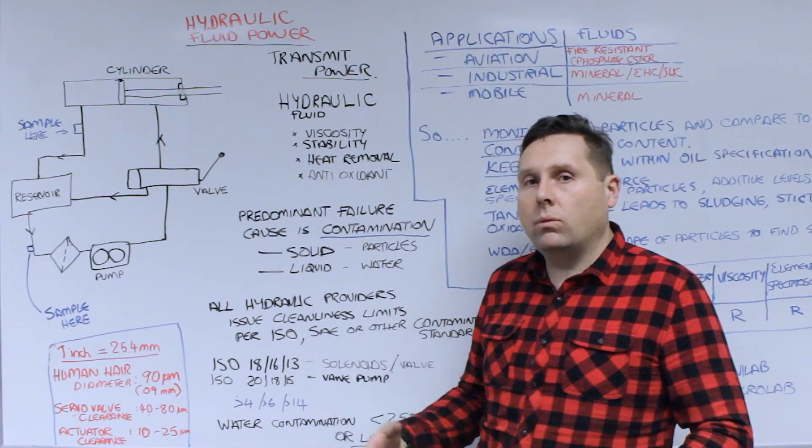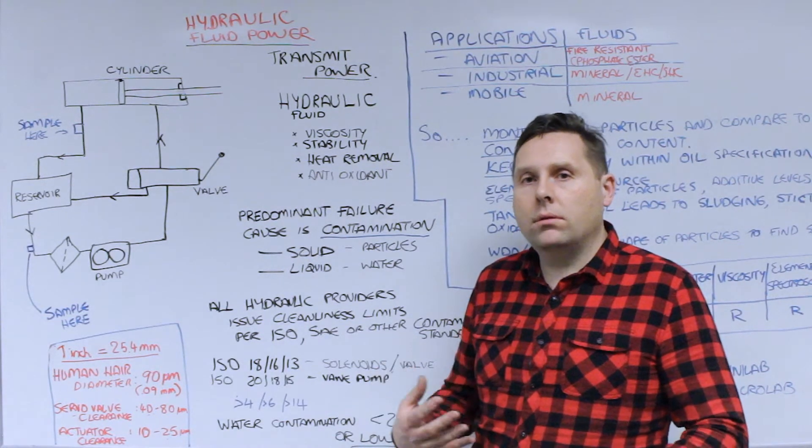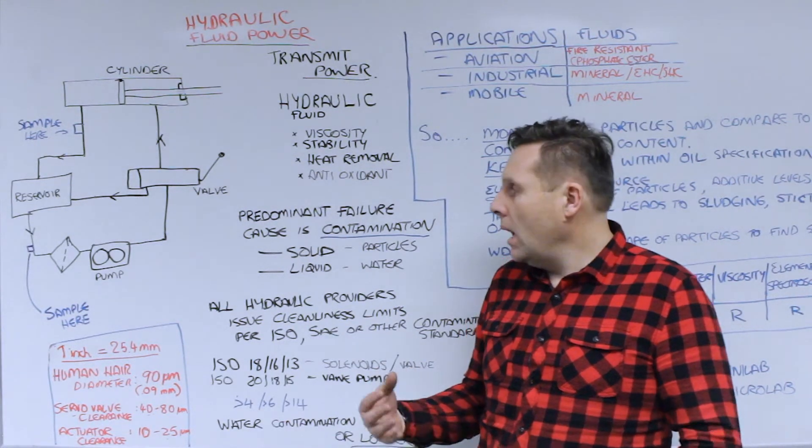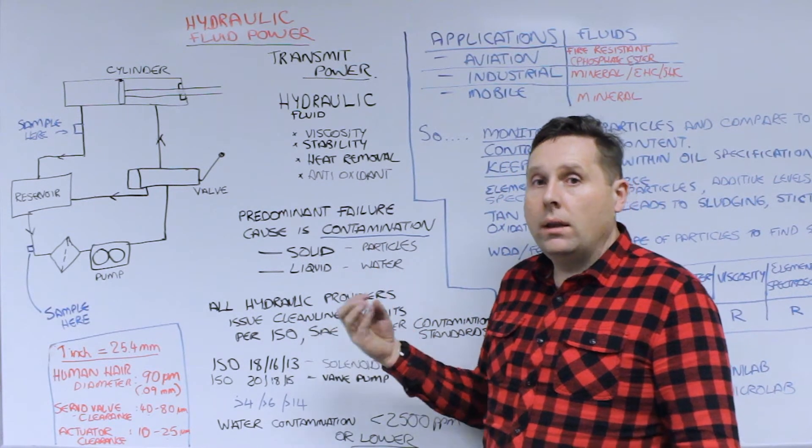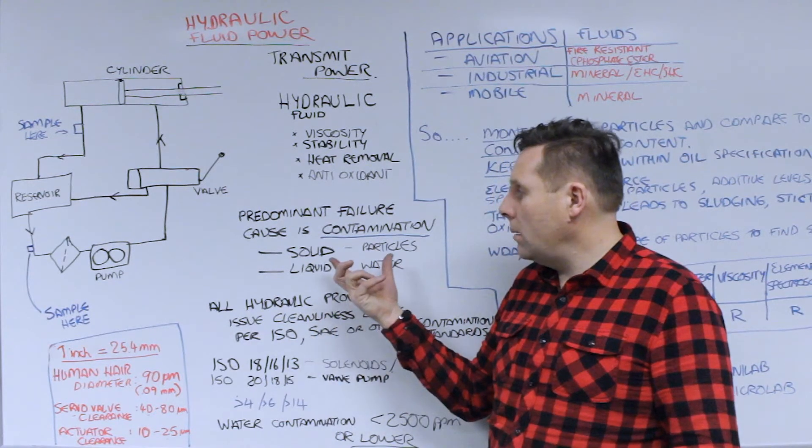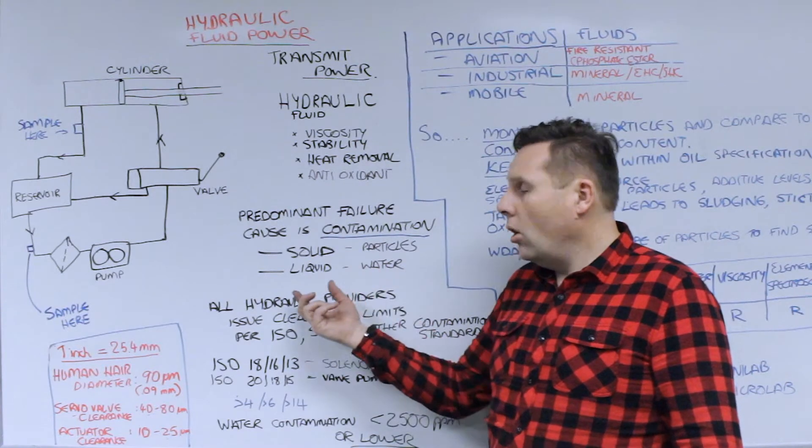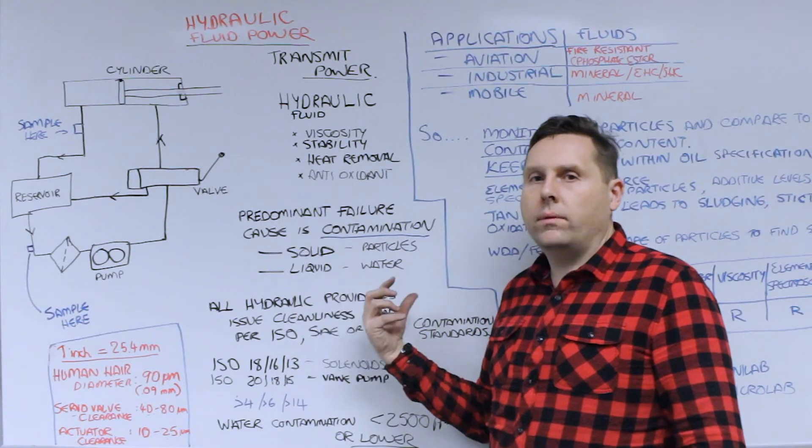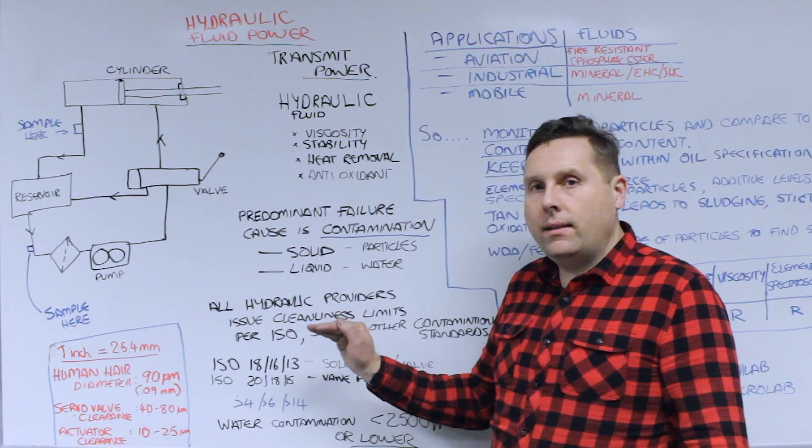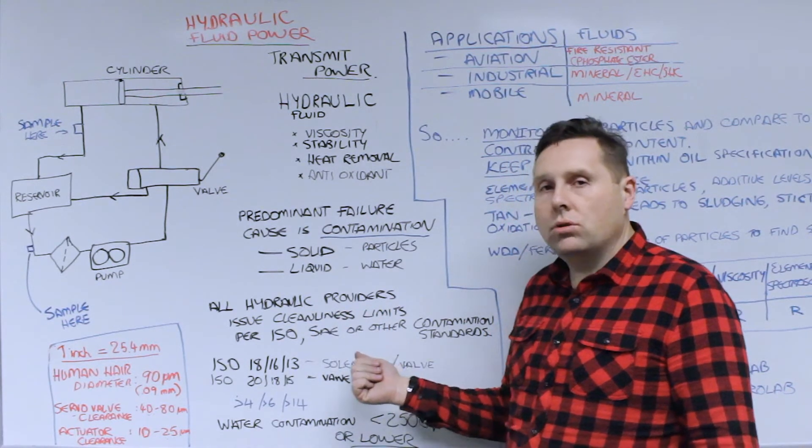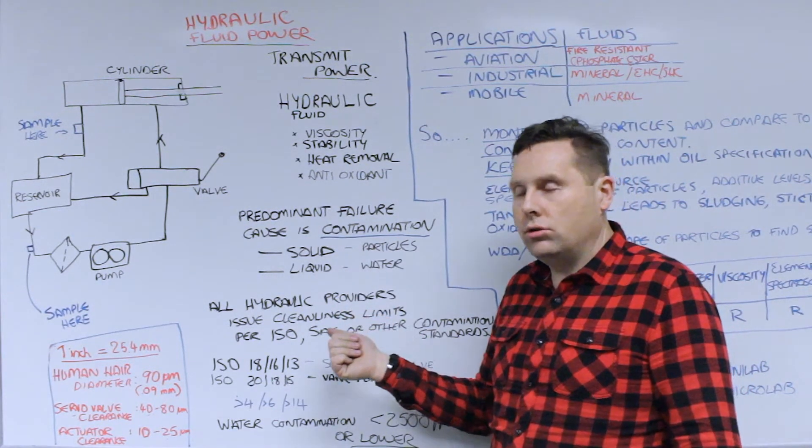But what are we worried about? We use fluid analysis and oil analysis to monitor the quality of hydraulic systems because the predominant failure for a hydraulic system is related to contamination. There are two major types. The most predominant is solids, solid contamination, particles, or where particles are getting in, or liquid, water or some sort of other rare process fluid. All hydraulic providers will provide some sort of limits or alarms to make sure that these levels of contamination are controlled.